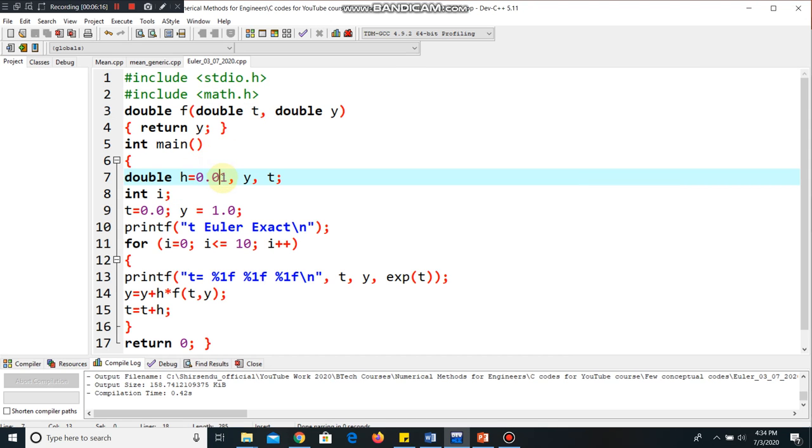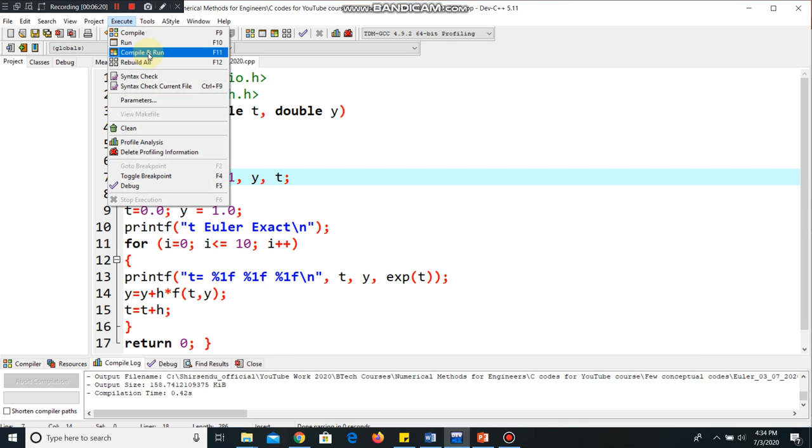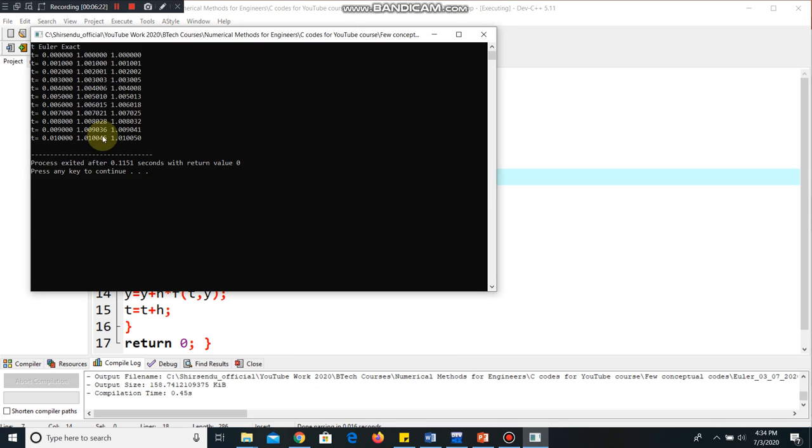If we put more, say 0.001, again it will be calculating for 10 values only, but I will check the exact value. You can see here, this is the numerical value 1.01 and the analytical value is also 1.01.